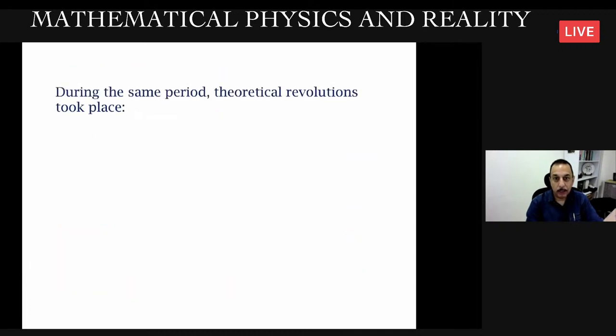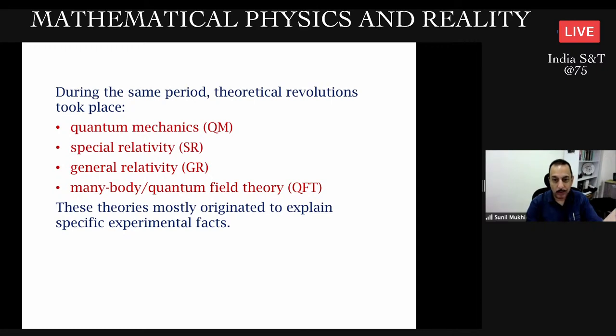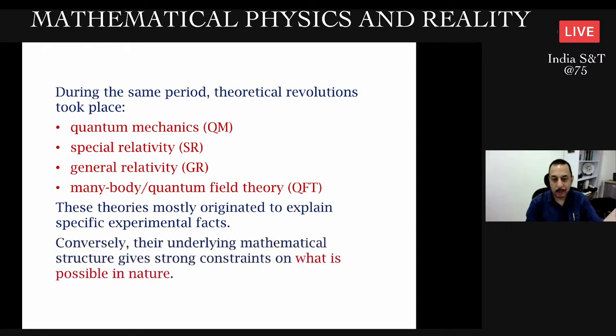More recently, there are exciting developments in novel topological materials. As the name suggests, these have something to do with mathematics. During the same period, several theoretical revolutions took place: quantum mechanics, special relativity, general relativity, many body or quantum field theory starting with quantum electrodynamics. Most of these theories originated to explain specific experimental facts, but their underlying mathematical structure gives constraints on what is possible in nature.